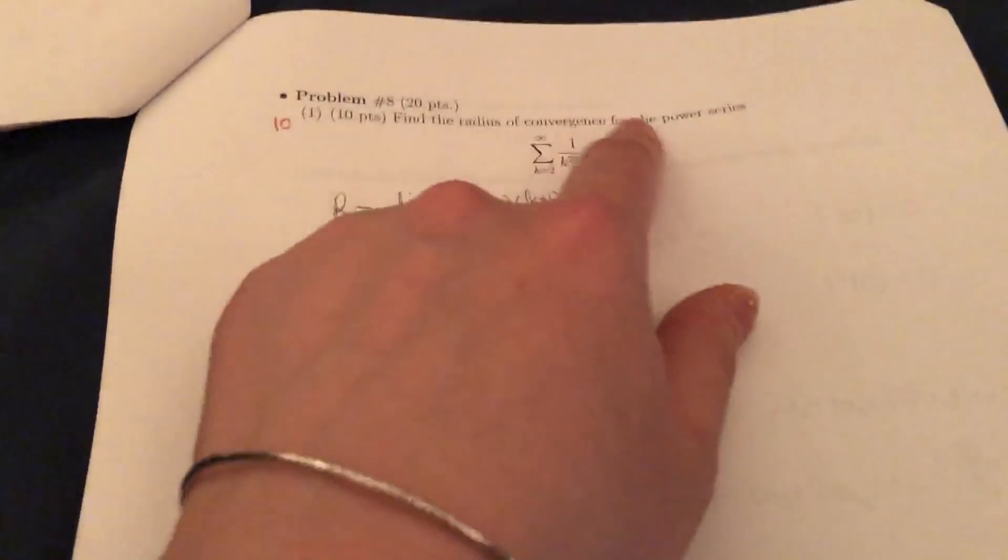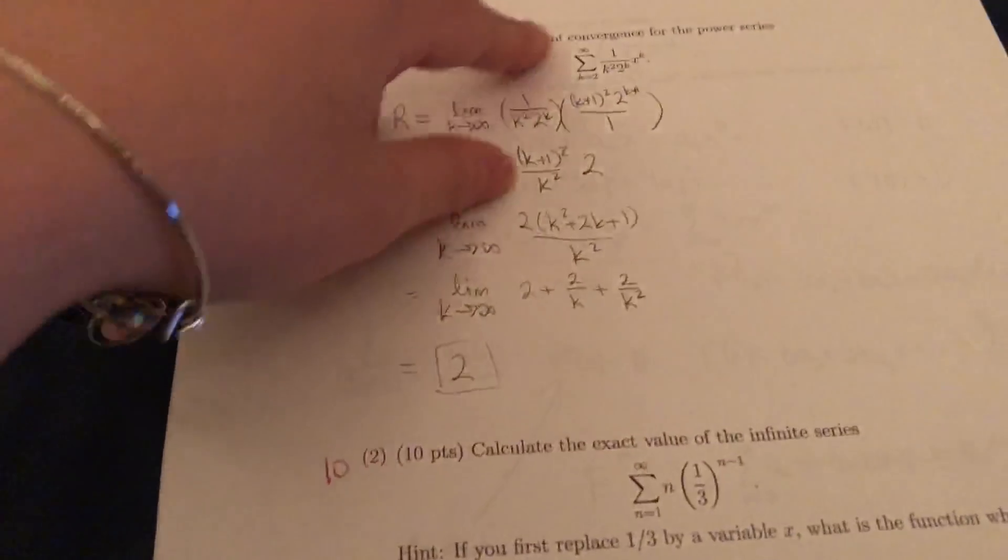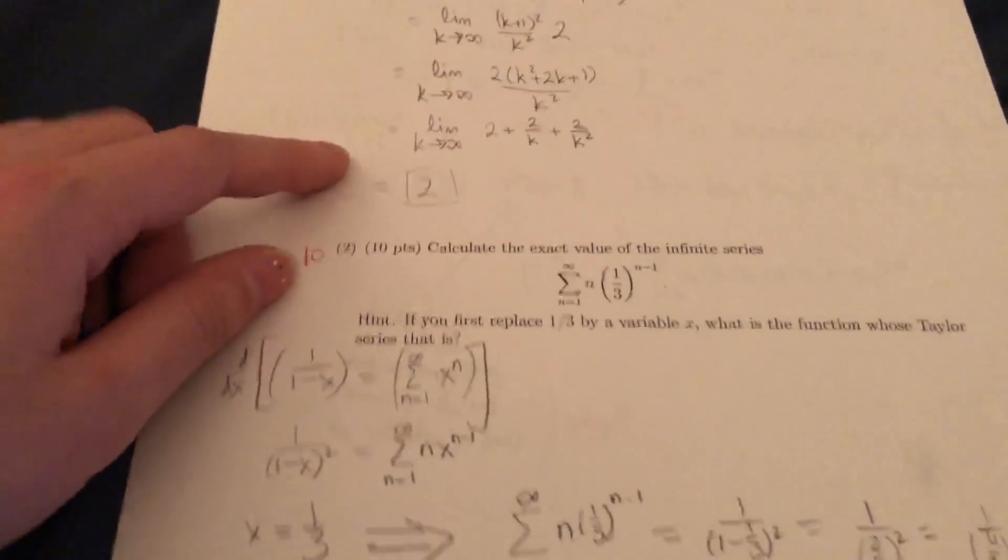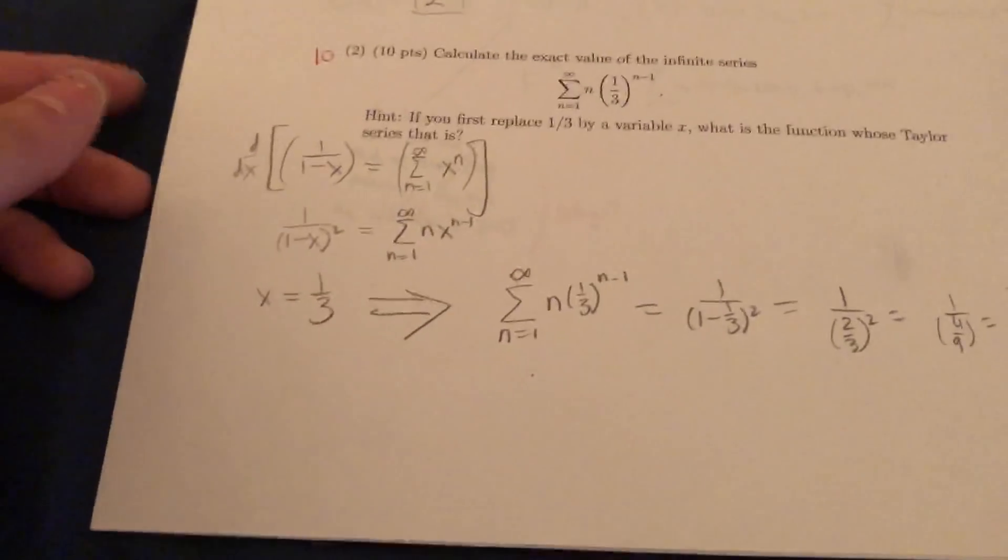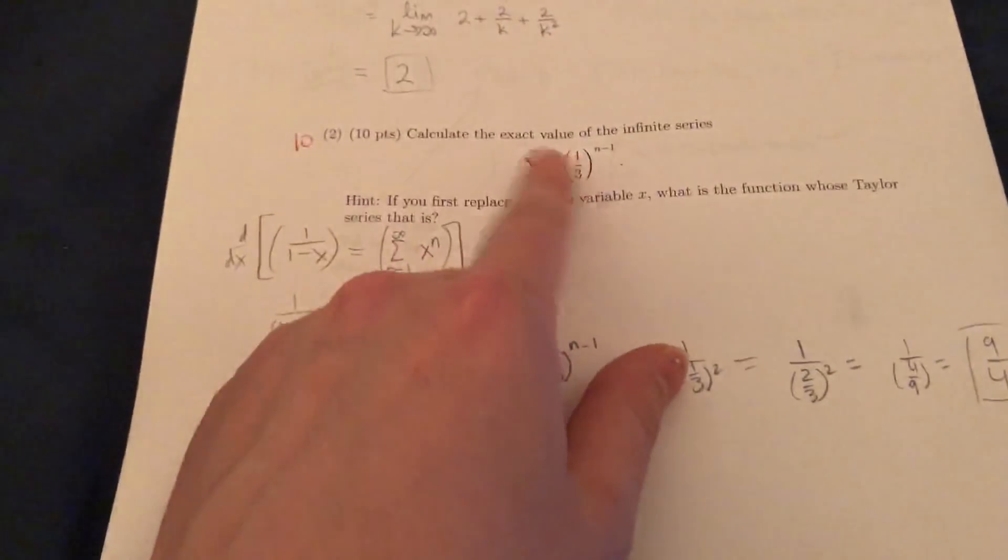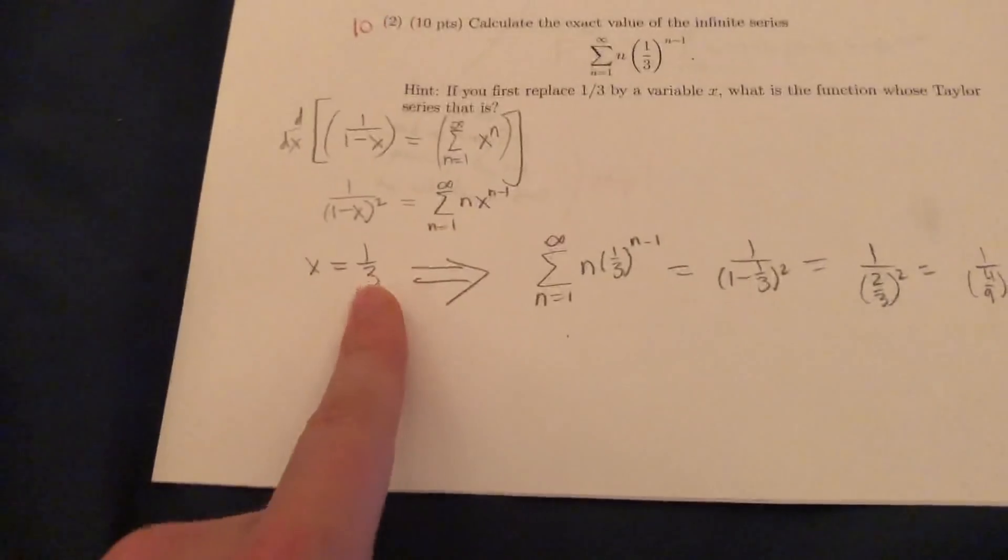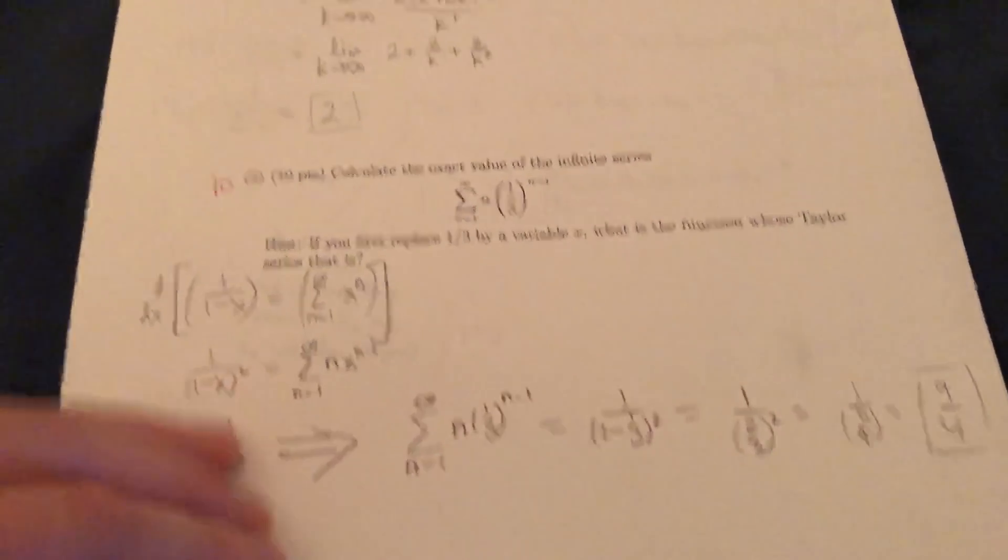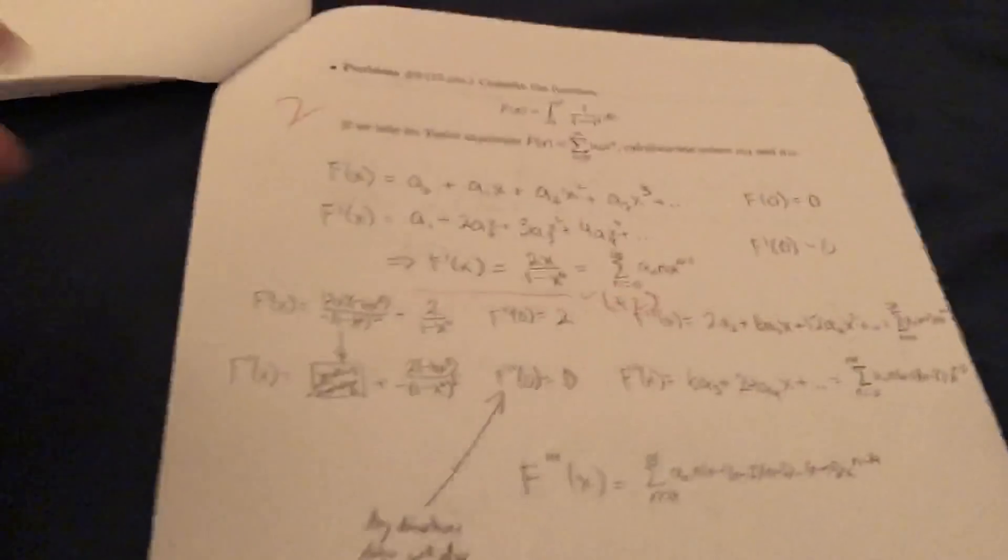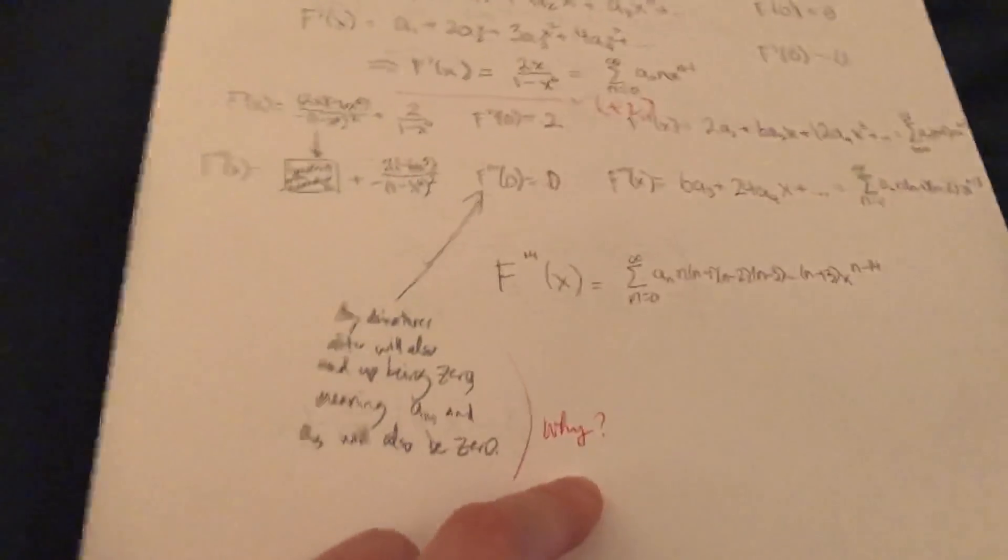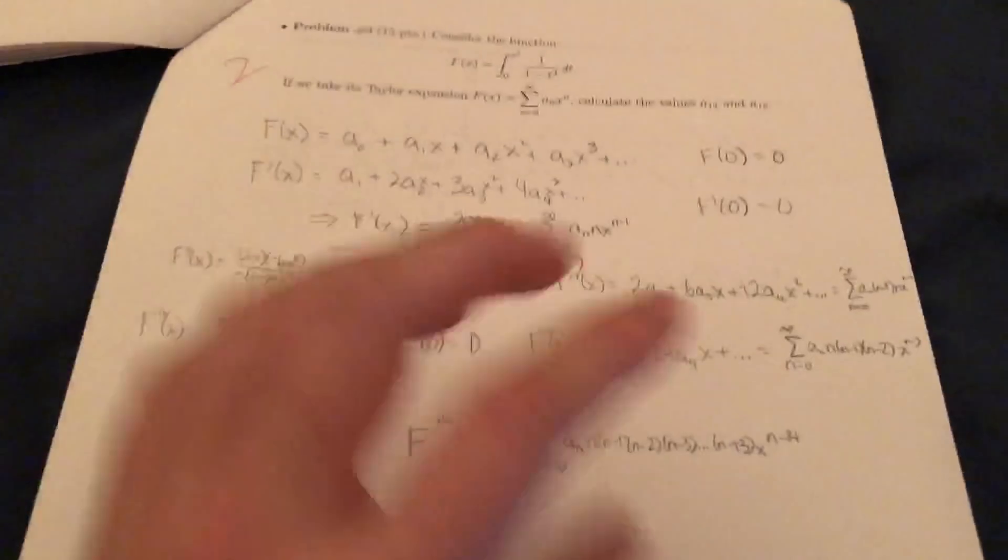Problem eight. Find the radius of convergence for the power series. Looks like I did good here. Nice. Shoot, I really hated learning about power series. And then calculate the exact value of the infinite series. This looks like I did fine here as well. And then this one. Then again, they put why. So it looks like I didn't explain enough again, even though I tried. Very sad.